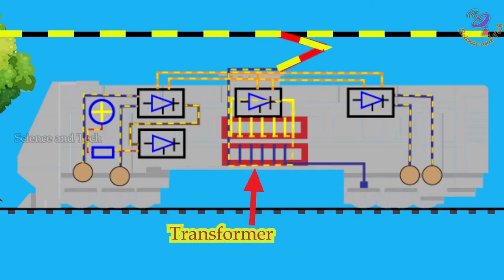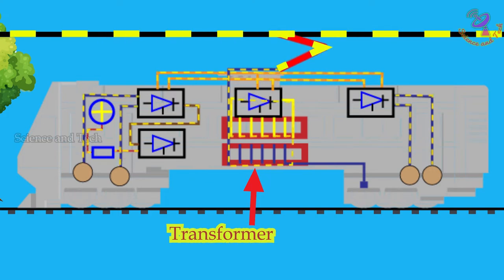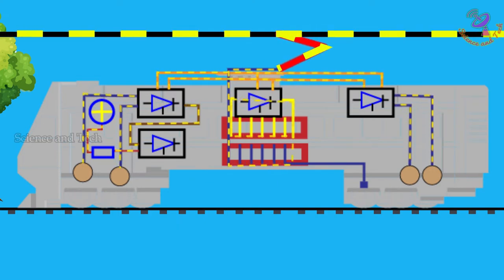The electricity which passes through a circuit breaker will transmit to the transformer which is located inside a locomotive. The function of the transformer is to distribute electricity to various lines from the single main power supply.